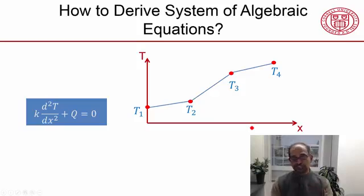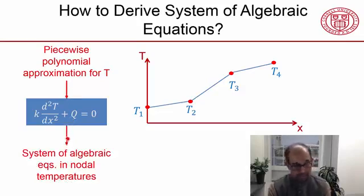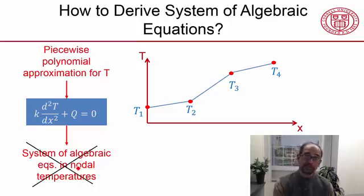So the first thing that occurs to me is that I can take that shape, that is my piecewise polynomial approximation for temperature, and I can plug it in here, and maybe I'll get my system of algebraic equations in the nodal temperatures. And I tried that, and it turns out it doesn't work.